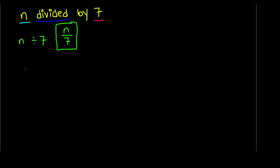Let's do another example. Let's say we have '16 times the variable m'. Let's underline our key terms. Our variable is m, our number is 16. The operation says '16 times m' — we know that in mathematics, 'times' refers to multiplication, like our times tables are multiplication tables. So 'times' is telling us that we are multiplying. We know that 16 is being multiplied to m.